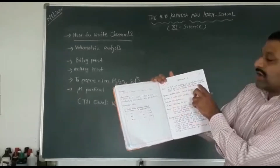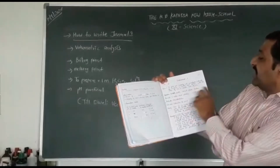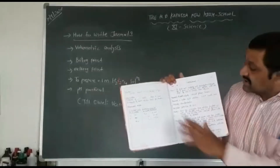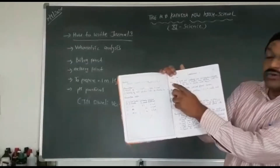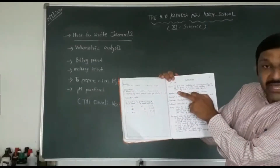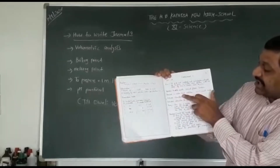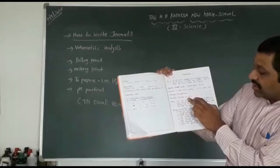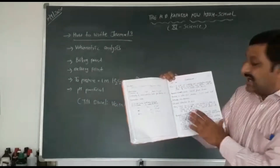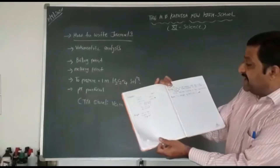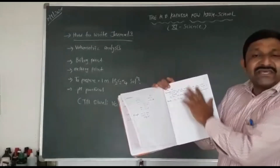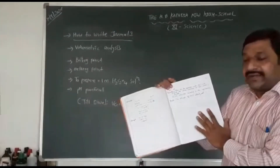For volumetric practical, you have to write down your aim first, then apparatus, chemical, indicator, endpoint, and theory. Then write procedure in the single line page. Lastly, precaution and result should also be written in the single line page.